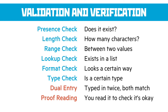Let's have some examples: validation checks are in blue and verification checks are in red. Validation includes a presence check — checking that data is actually being typed in — a length check for how many characters are present, a range check if the value is between two numbers or two values, a lookup check if there's a list of options it could be, and a format check to see if it looks a certain way with letters and numbers in the right places.